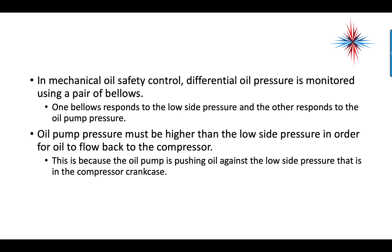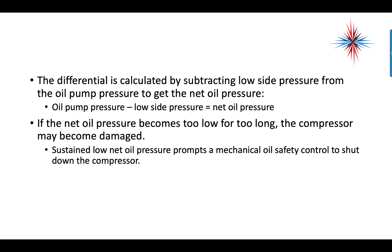In the mechanical oil safety control, differential oil pressure is monitored using a pair of bellows. One bellows responds to the low side pressure and the other responds to the oil pump pressure. Oil pump pressure must be higher than the low side pressure in order for oil to flow back into the compressor, because the oil pump is pushing oil against the low side pressure in the compressor crankcase. The differential is calculated by subtracting the low side pressure from the oil pump pressure to get the net oil pressure: oil pump pressure minus low side pressure equals net oil pressure. If the net oil pressure becomes too low for too long, the compressor may become damaged, and sustained low net oil pressure prompts the mechanical safety oil control to shut down the compressor.